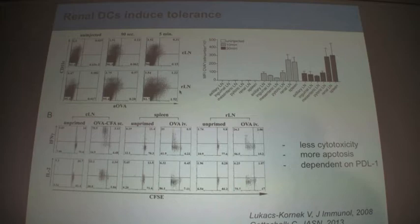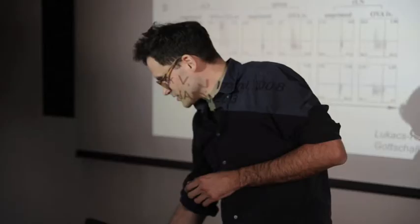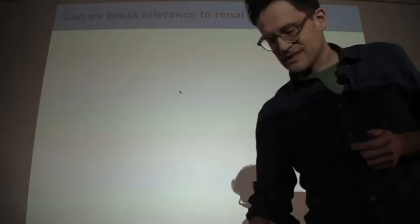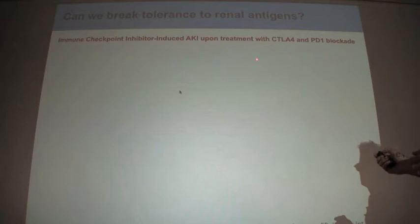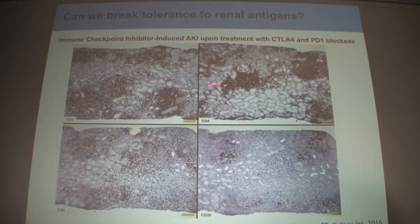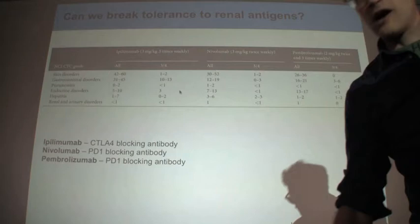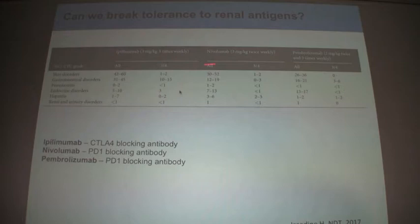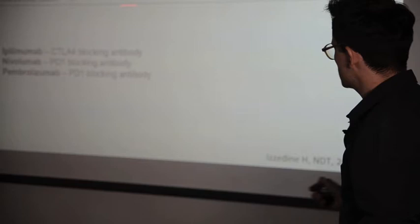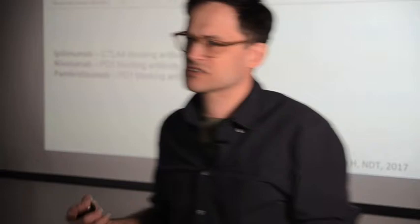Do we have any hints that this also happens in humans, and can we break this tolerance? Over the last around five years, we've seen the rise of checkpoint blockade inhibitors. Now, routinely in the clinic, patients are treated with anti-CTLA-4 and PD-1 antibodies. Some of these patients, under treatment with checkpoint blockade inhibitors, develop renal failure. And if you look at this renal failure, you see T-cells invading the kidneys — so seemingly this tolerance can be broken. But if we look at how often this happens across different checkpoint inhibitors, renal disorders occur much less frequently than immune manifestations in other organs. It seems that this tolerance can be broken, but it's kind of hard to break.